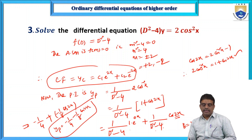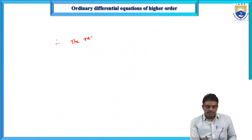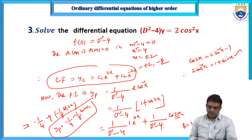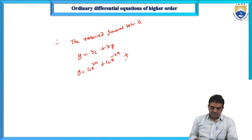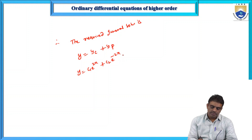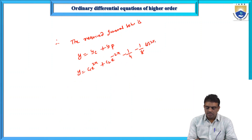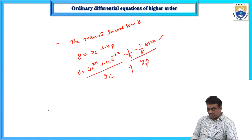Therefore the general solution y = yc + yp = c₁e^(2x) + c₂e^(-2x) - 1/4 - (1/8)cos2x. The combination (summation) of yc and yp is the required general solution.